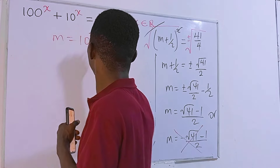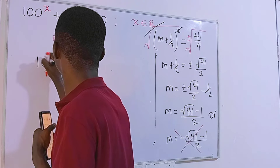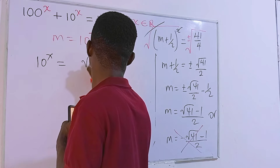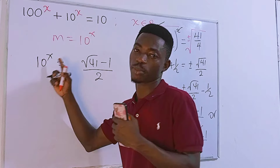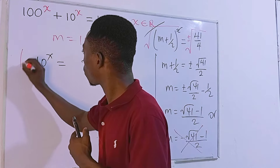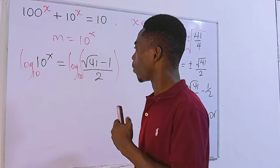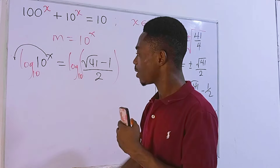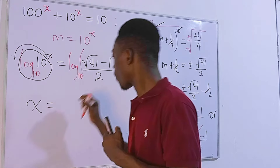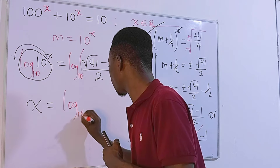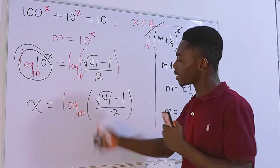Recalling that m = 10^x, we substitute back: 10^x = (√41 − 1)/2. To solve for x, which is in the exponent, we take log base 10 of both sides. We can bring x to the front, so x times log base 10 of 10 equals log base 10 of (√41 − 1)/2. Since log base 10 of 10 is 1, we get x = log₁₀((√41 − 1)/2).